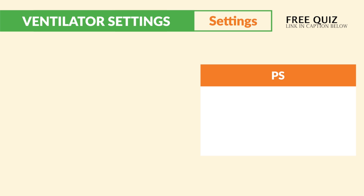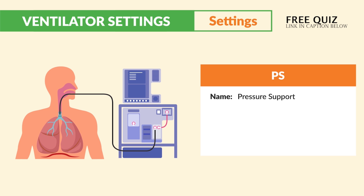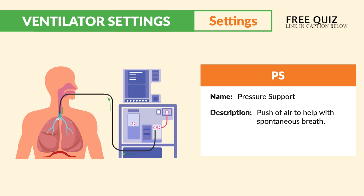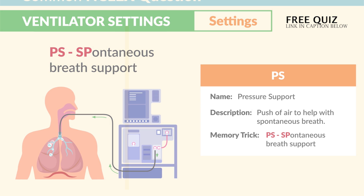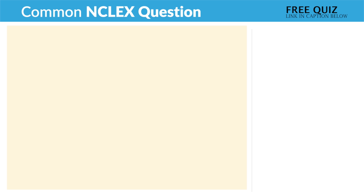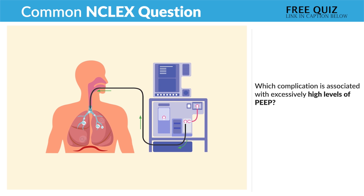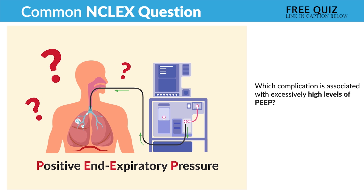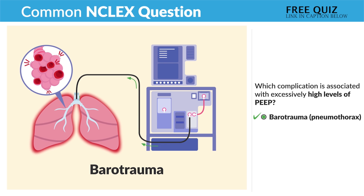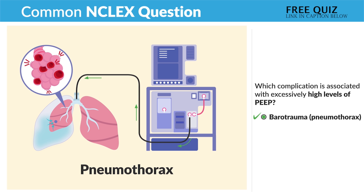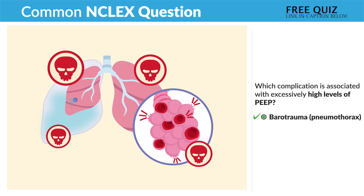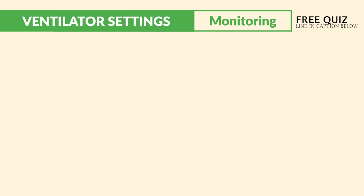Memory trick: the double P's — PEEP pushes open the alveoli. Last is PS — pressure support — like a PS at the end of an email. It pushes air to help with spontaneous breathing. Think: PS is spontaneous breath support. A common NCLEX question: which complication is associated with excessively high levels of PEEP? The answer is barotrauma or pneumothorax — a popped lung from too much positive pressure being pushed into the lungs.